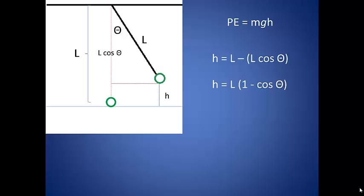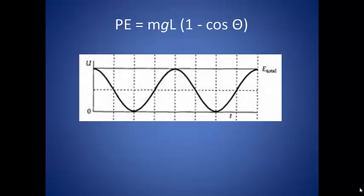If we plug this into our potential energy equation, we have MgL times 1 minus the cosine of theta. And that tells us the potential energy of our bob at that point. Looking at a graph of this potential energy gives us a cosine function. Notice this is different from what we graphed as a mass on a spring. When we did that, we got a graph that was a parabola that opened up.